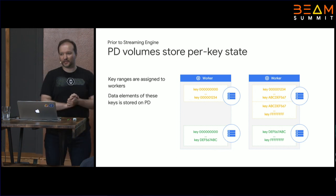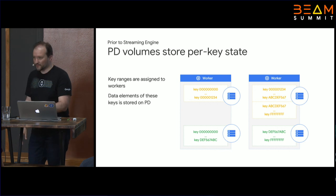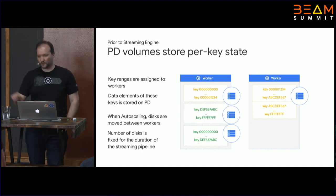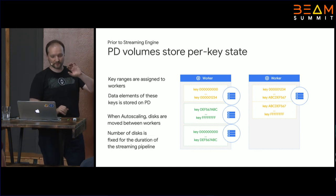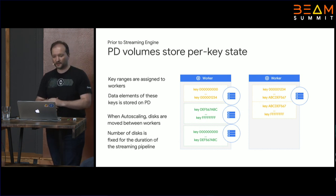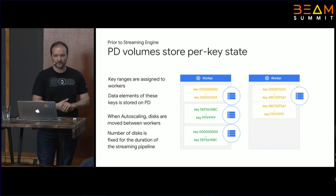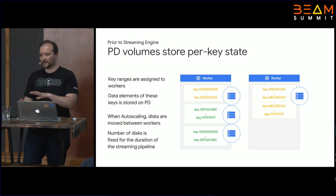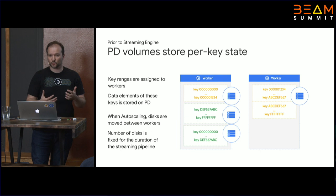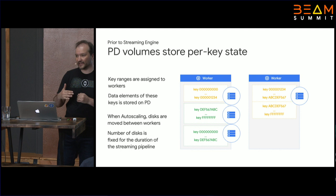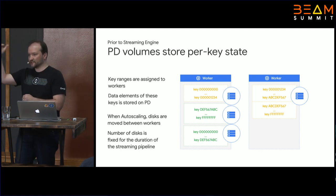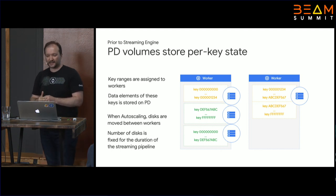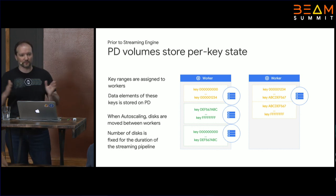When we decide to auto-scale a streaming pipeline using appliance windmill, we reassign the persistent disks — taking a disk from one worker and assigning it to another. Volume reassignment can be done pretty quickly. But the problem has always been that the unit of auto-scaling is the volume, so we have to know how many volumes to create beforehand. The granularity of auto-scaling is coarse — we jump from 5 workers to 10 to 15, then maybe back to 7 or 6. There are big gaps in the values the pipeline can assume.